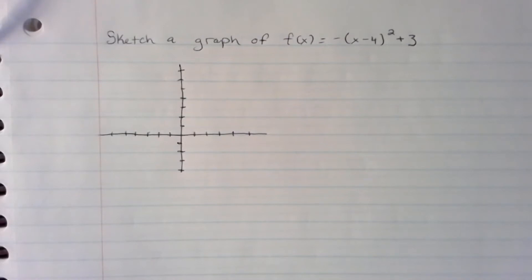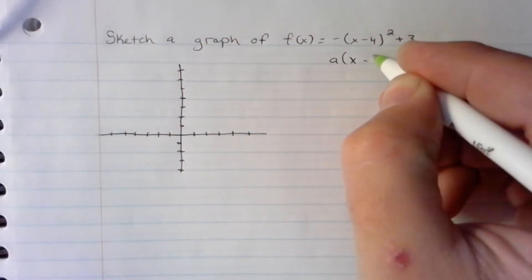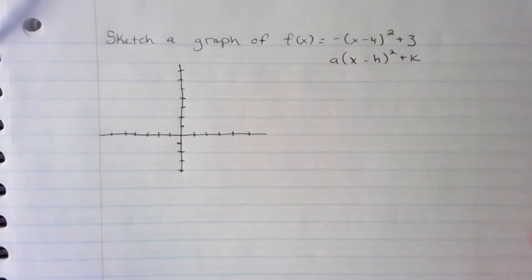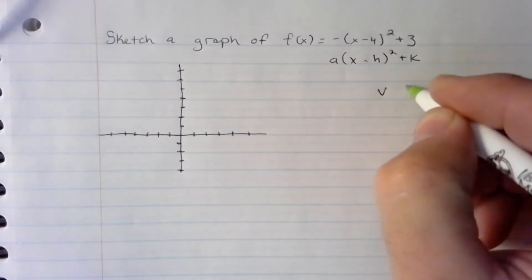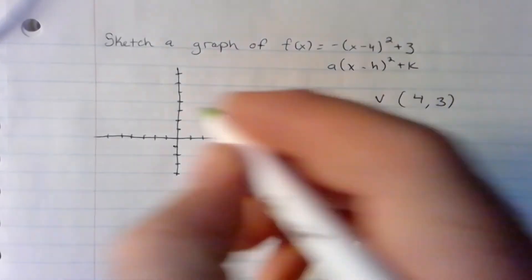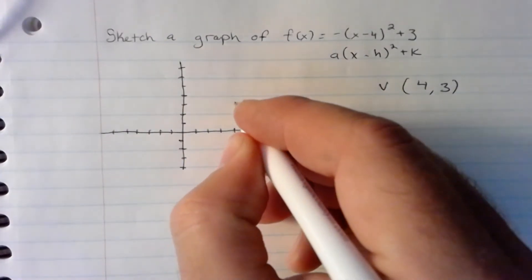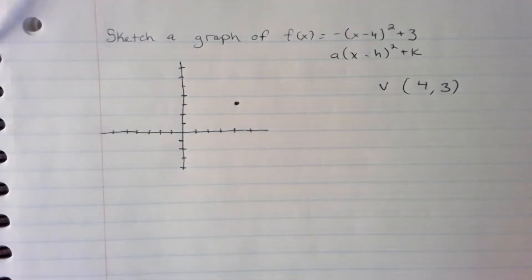So right away we see that it is in vertex form, x minus h squared plus k. This tells us our vertex is 4 comma 3. So I can go ahead and plot that on our graph, right 4 up 3.